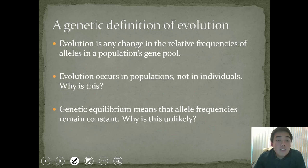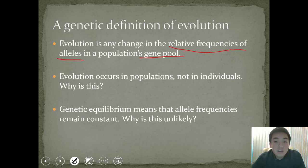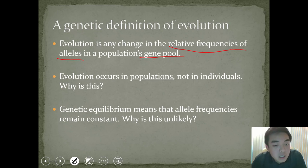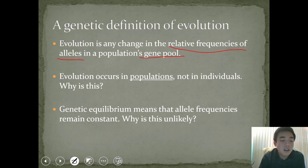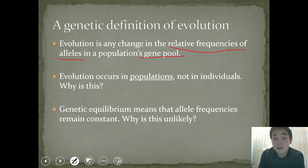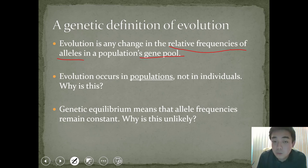The genetic definition of evolution is any change in the relative frequency of alleles in a population's gene pool. Evolution is that change in allele frequencies over time. Importantly, evolution occurs in populations and not in individuals. This is because natural selection doesn't work on individuals — an individual only has one type of trait and there's no variation to select upon. In a population, however, you see multiple traits, and that variation is what natural selection works upon.